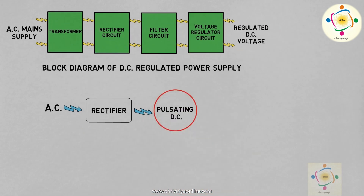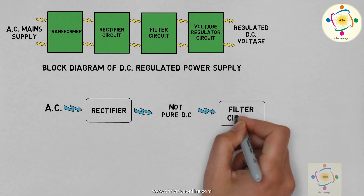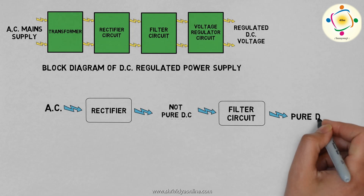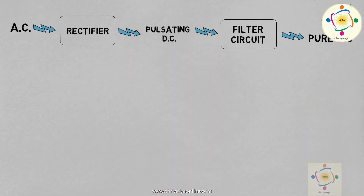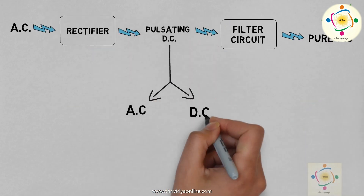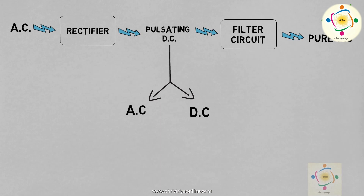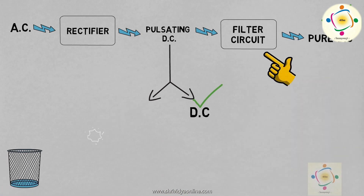The output of the rectifier is not pure DC. So to get pure DC or a smooth waveform, we need a filter circuit. Pulsating DC has both components — AC and DC — and as we need only DC, we need to filter and remove the AC component.